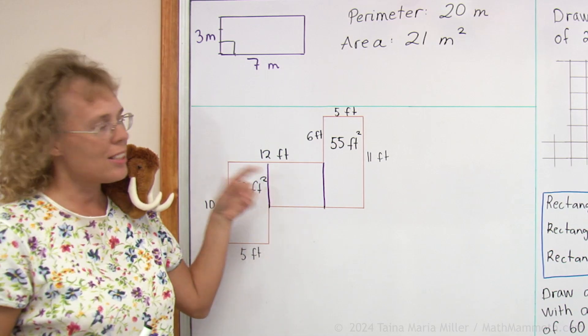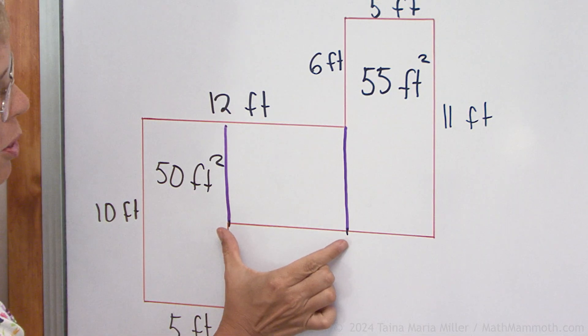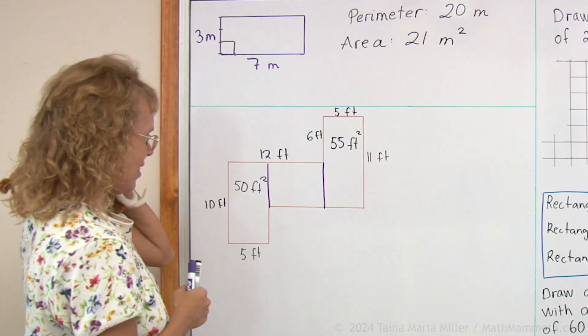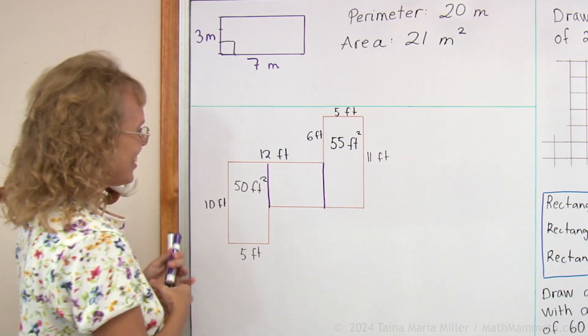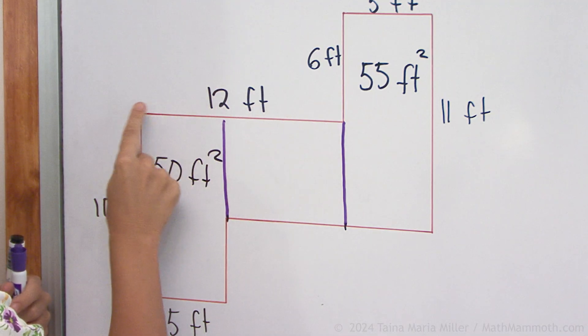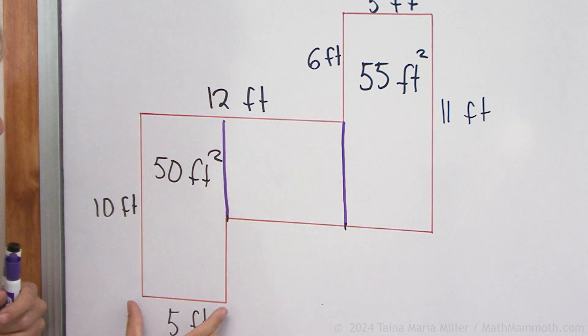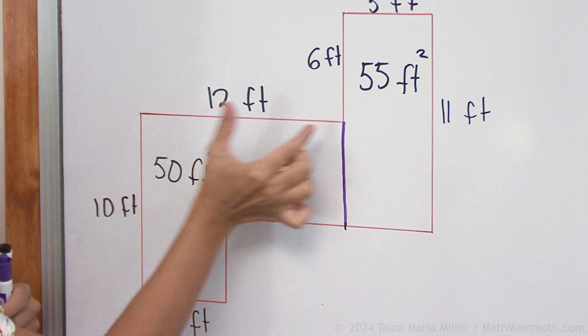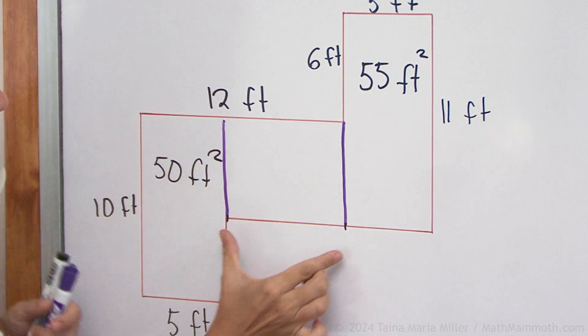And now this rectangle. Notice we don't know this side length. Can you figure it out? Aha, Matti knows the answer already. We look at this one here, 12 feet and this one here 5. So this much is 5 and the 12, so this must be 7 feet.